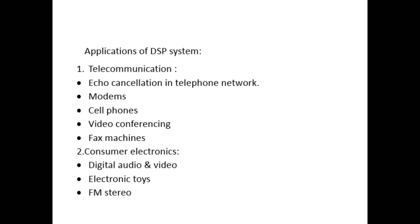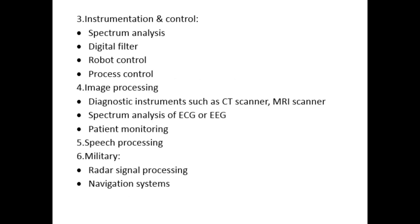In consumer electronics, DSP is used for digital audio and video, electronic toys, and audio studios. In instrumentation and control it is used for spectrum analysis, digital filters, robot control, and process control. In image processing it is used in diagnostic instruments such as CT scanners, MRI scanners, and ECG spectrum analysis, as well as patient monitoring, speech processing, military radar signal processing, and navigation systems.